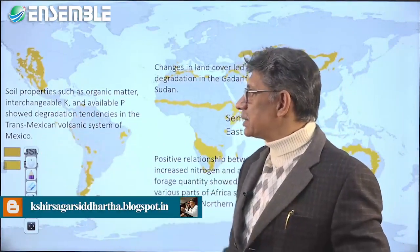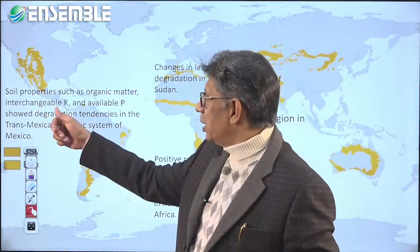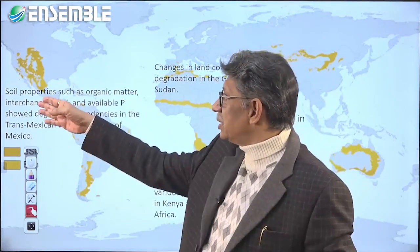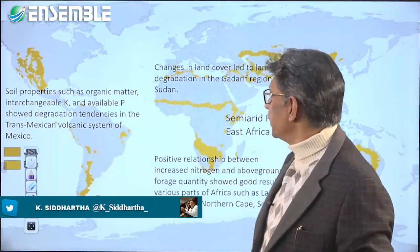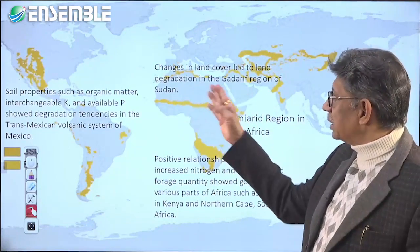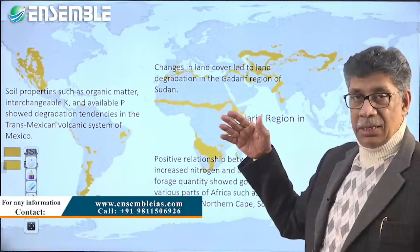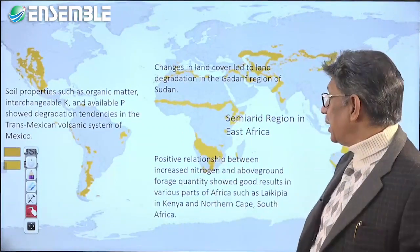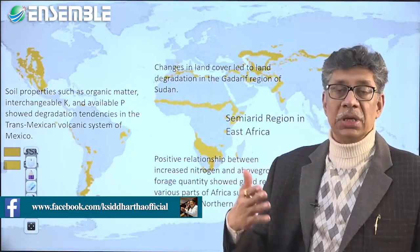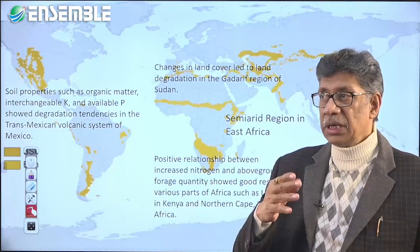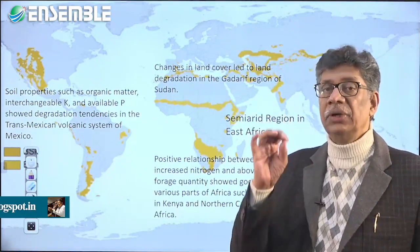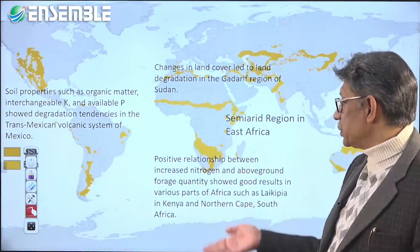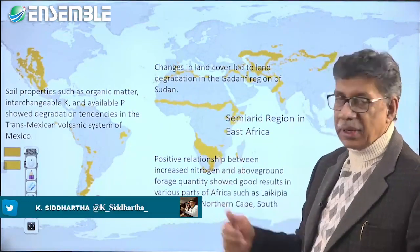This is clearly seen in the trans-Mexican volcanic region, where soil properties such as organic matter, exchangeable phosphorus, and potassium availability show degradation tendencies, consequently determining forage quality. Similarly, changes in land cover have led to degradation in the Gedaref region of Sudan. Most of these studies have been conducted in the Sahel region, where land use cover is deliberately used to determine forage, since this is where people derive their livelihoods entirely from animals. A positive relationship between increased nitrogen and above-ground forage quantity has been found across Africa.